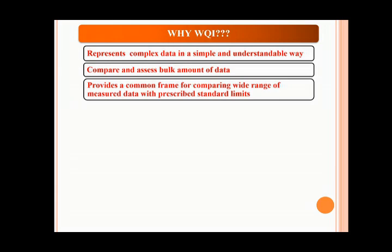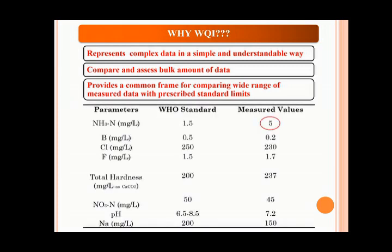That is where WQI comes in use. Also, when you are comparing measured value of parameters to prescribed standards and value of some parameters fall beyond the prescribed limits, what will you conclude? With WQI, you can evaluate such values and ascertain the overall status of the water quality. In the table, you can see the value of ammonium nitrogen to be 5 mg per litre, which is much higher than the limit prescribed by WHO for drinking water.